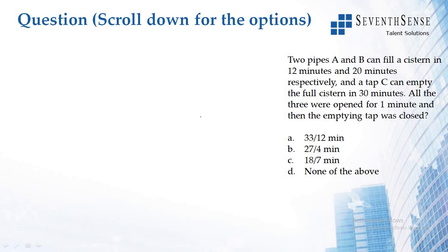From the given question, you can understand that the time required by pipe A to fill a cistern is 12 minutes and by pipe B is 20 minutes, and C can empty that cistern in 30 minutes. Here all three pipes were opened for one minute, and then the emptying tap was closed.